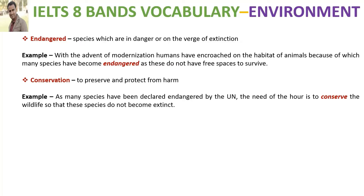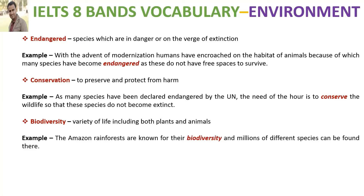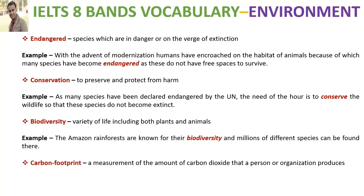'Biodiversity' means the variety of species living in a place, including both plants and animals. According to the example, the Amazon forests are famous for their biodiversity and are home to more than a million species.